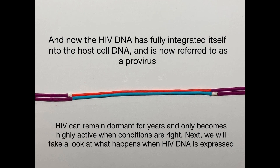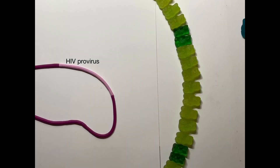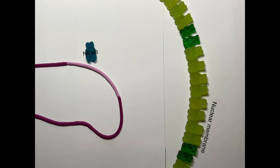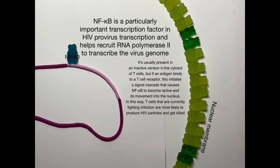When HIV DNA is expressed, NF-κB is a particularly important transcription factor that helps recruit RNA polymerase II to transcribe the virus genome. It is usually present in an inactive form in the cytosol of T cells, but when an antigen binds to a T cell receptor, a signal cascade activates NF-κB and facilitates its movement into the nucleus. In this way, T cells that are actively fighting infection are most likely to produce HIV particles and get killed.